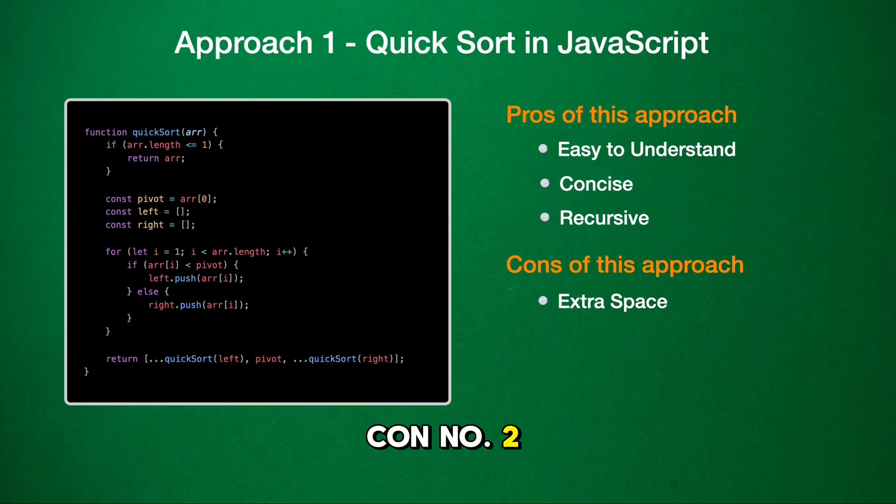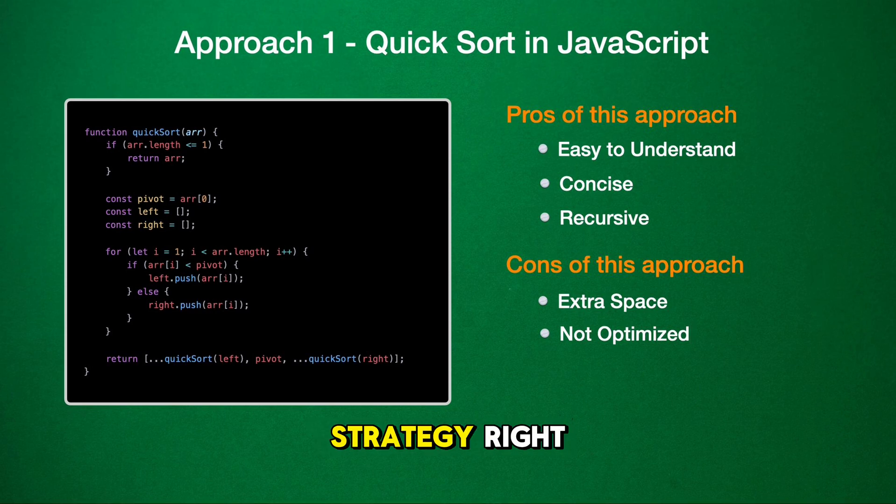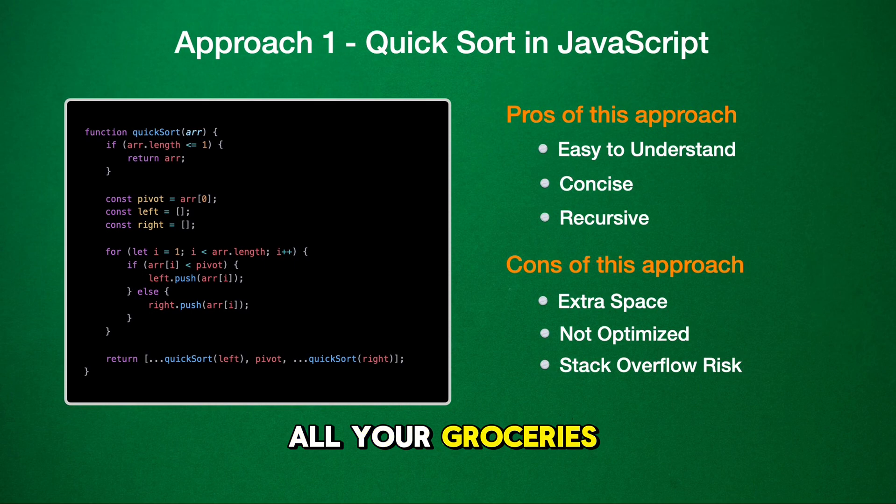Con number two, not optimized. This method can get stuck in a rut by always picking the first element as the pivot. Imagine always starting a maze from the same wrong turn. Not the best strategy, right? And finally, the stack overflow risk. Because the function keeps calling itself, it could get overwhelmed with a really long list. It's like if you tried to carry all your groceries in one trip. Sometimes it's just too much.